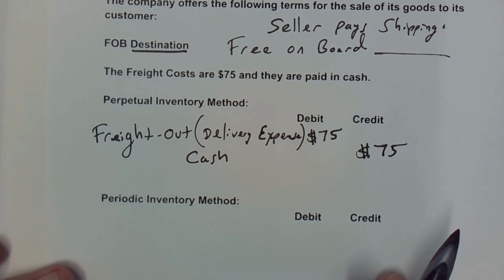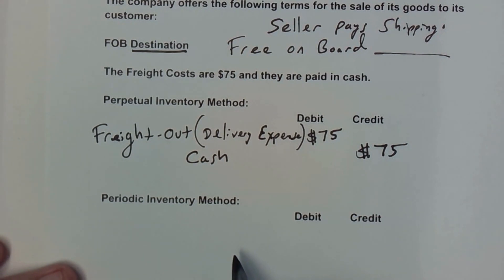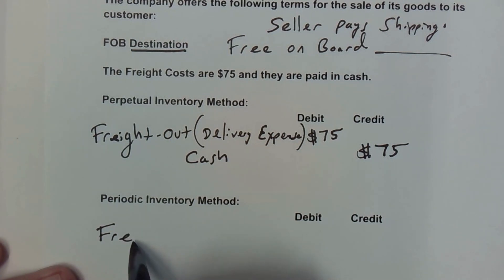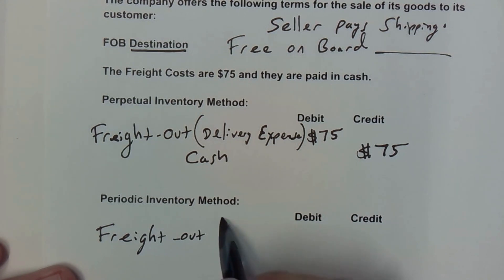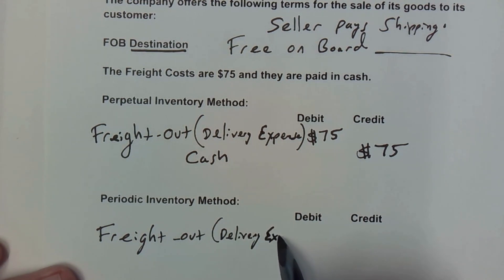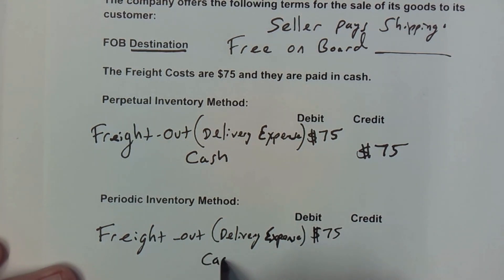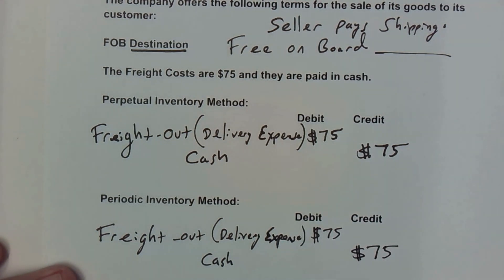Now let's look at how to treat the FOB destination in the periodic inventory method. You'll be happy to know that it is treated exactly the same way. We're going to debit the freight out, or it could be delivery expense, depending on what that company has set up as the name of the account. They're going to debit that $75 and credit cash because the cash is going down by that amount. You have now properly accounted for FOB destination delivery charges in the periodic inventory method.